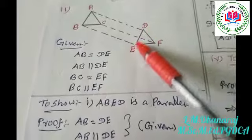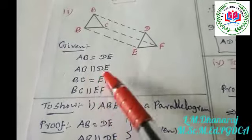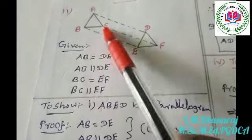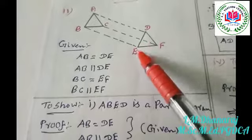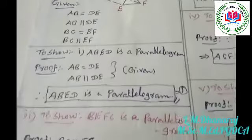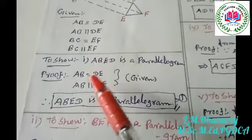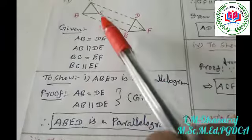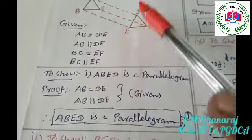AB is equal to DE, and AB is parallel to DE. Also, BC is equal to EF and BC is parallel to EF. These are the given conditions.